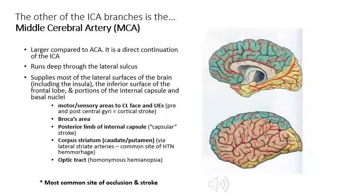The middle cerebral artery is a biggie because it's the main one — it typically causes the strokes you see in patients. It supplies blood to the precentral gyrus, postcentral gyrus, Broca's motor speech area, and Wernicke's area. It also supplies little branches to the optic tract, so if you knock out that optic tract, you have visual field deficits on the other side.